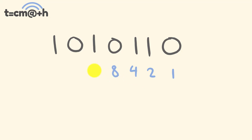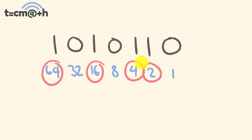Let's try a bigger one — convert 1010110 to decimal. Start with 1 and keep doubling: 1, 2, 4, 8, 16, 32, 64. We have a 64, plus 16, plus 4, plus 2. That gives us 64 plus 16 is 80, plus 4 is 84, plus 2 is 86. So 1010110 in binary equals 86 in decimal.